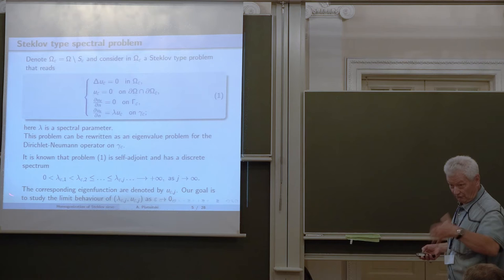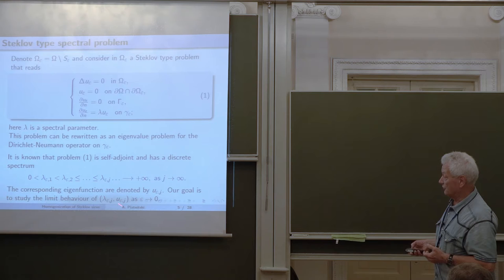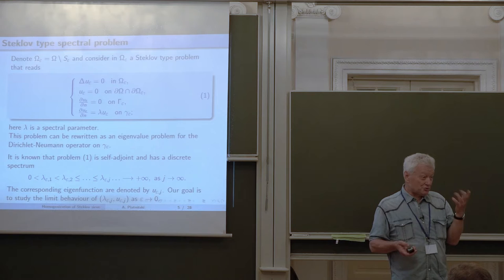Our goal is to study the behavior of the spectrum — of the eigenpairs, the bottom of the spectrum — meaning the j-th eigenvalue and eigenfunction as epsilon goes to zero. We should expect something interesting, because in the limit the cylinder disappears; the limit thickness is zero.